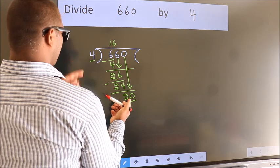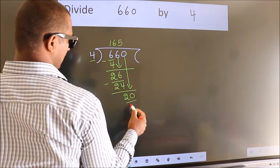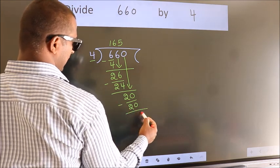When do we get 20? In 4 table, 4 fives, 20. Now, we subtract. We get 0.